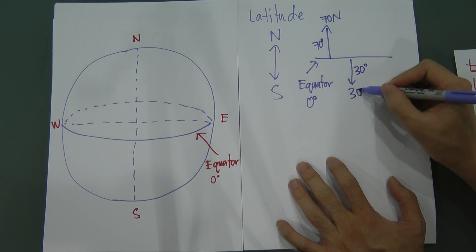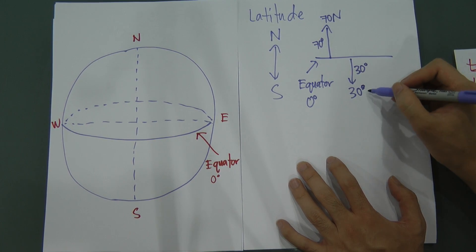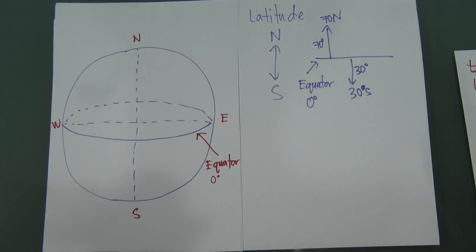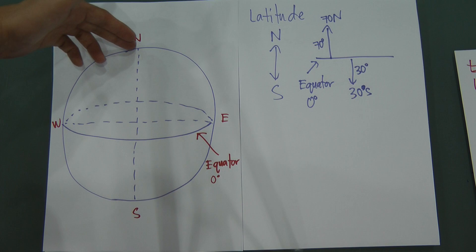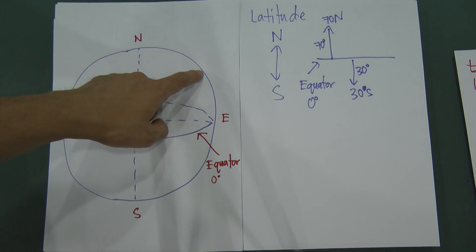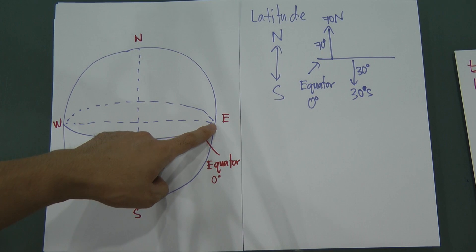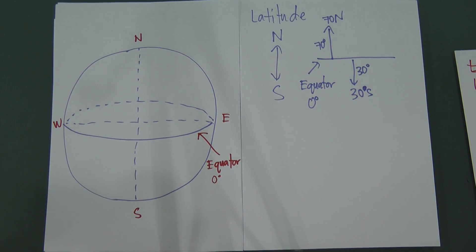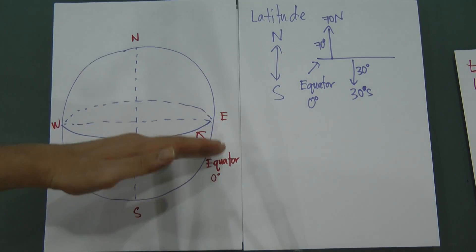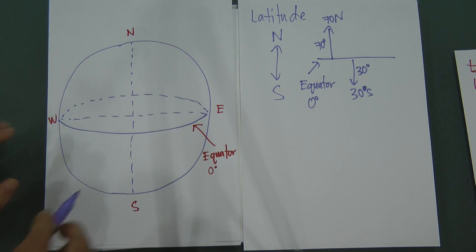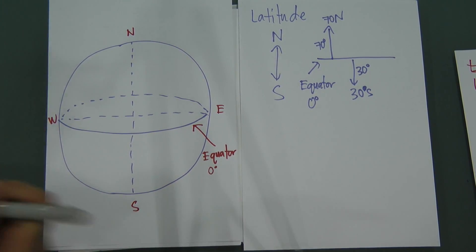Let me draw a line — this is the equator, starting at zero angle. From the equator going up 70 degrees is 70 North. Going down 30 degrees is called 30 South. The maximum latitude is 90 degrees because from the equator, going all the way up you reach the North Pole at 90 degrees.